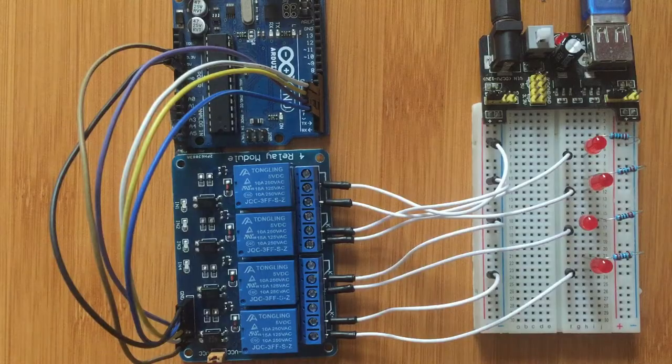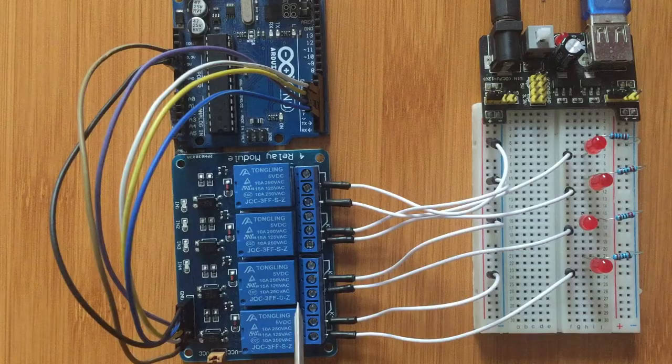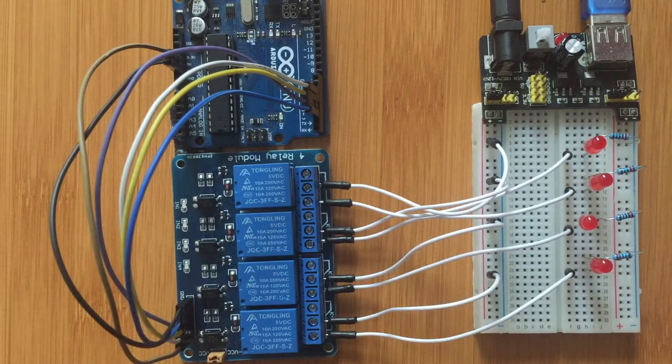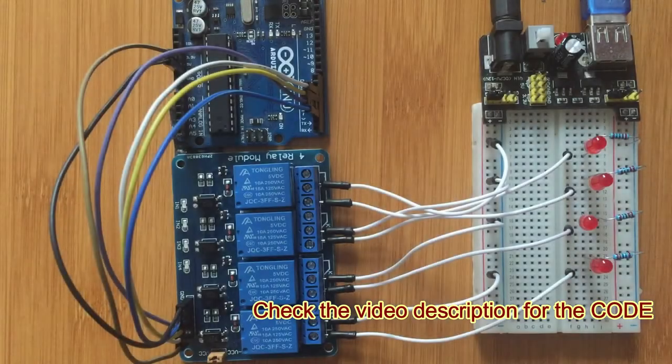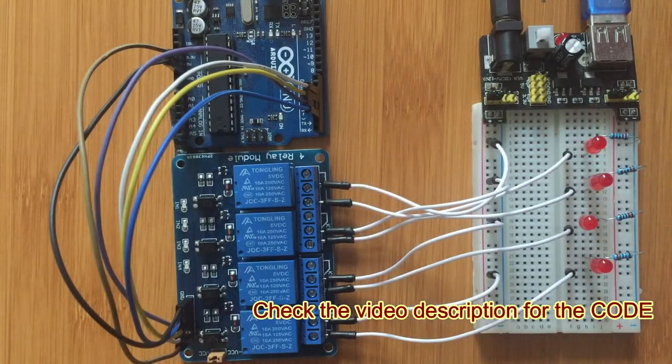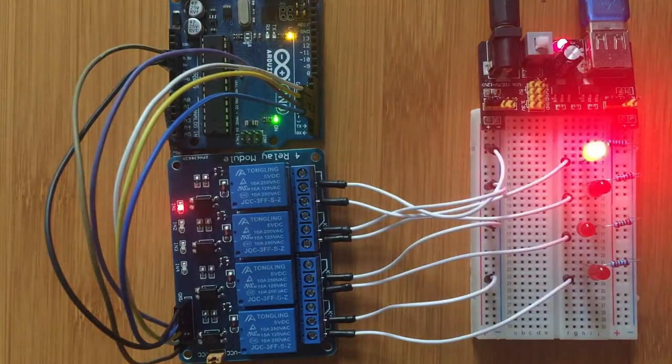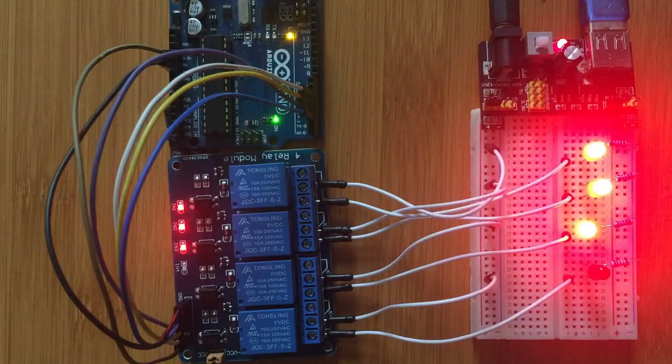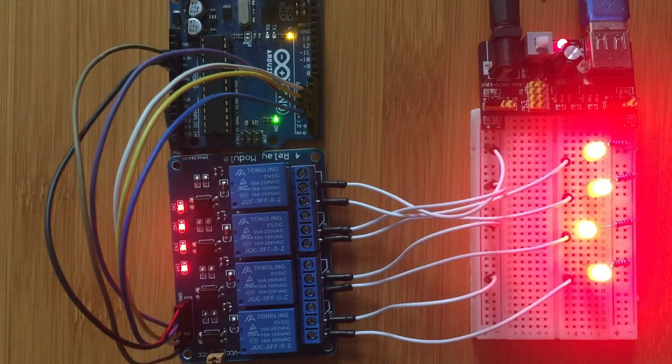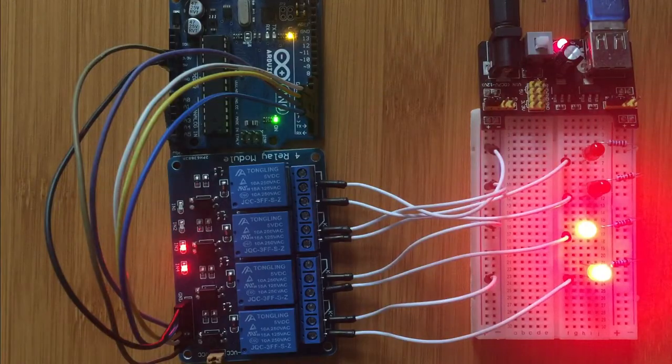Here we have the Arduino IDE showing the relay board, the Arduino board, and the LEDs. Then we are going to upload the code and this is what happens. So our code is now uploaded, and as you can see, we are having each of the relays lighting on and off.